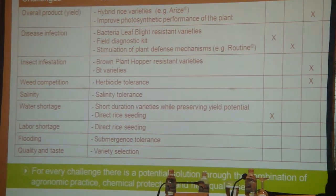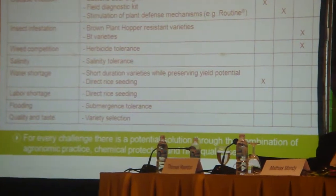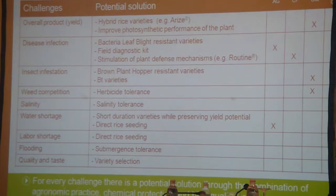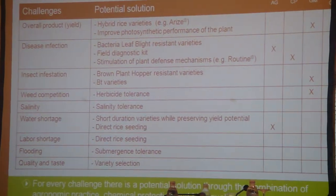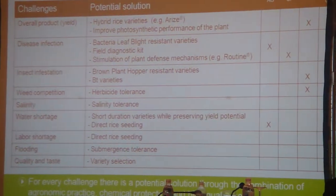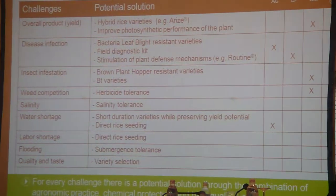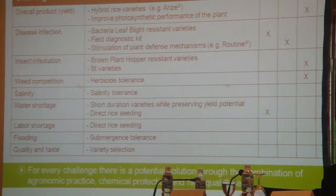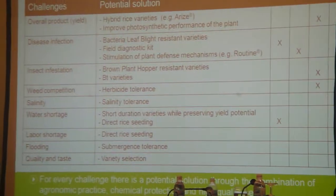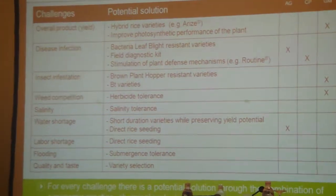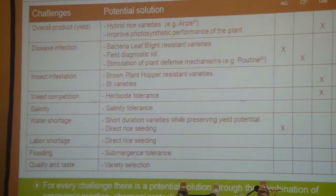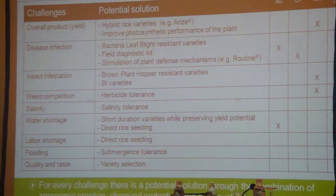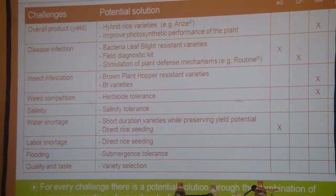If we are talking about overall production and yield — and here I'm really talking about rice — the first way to address the need to increase yield in rice is, by crop science, to develop new hybrid rice varieties. This is typically a non-GM solution. But we are also working on a GM solution in order to improve the phosphorylation-sensitive performance of the plant. These are elements in the pipeline that our research is working on.